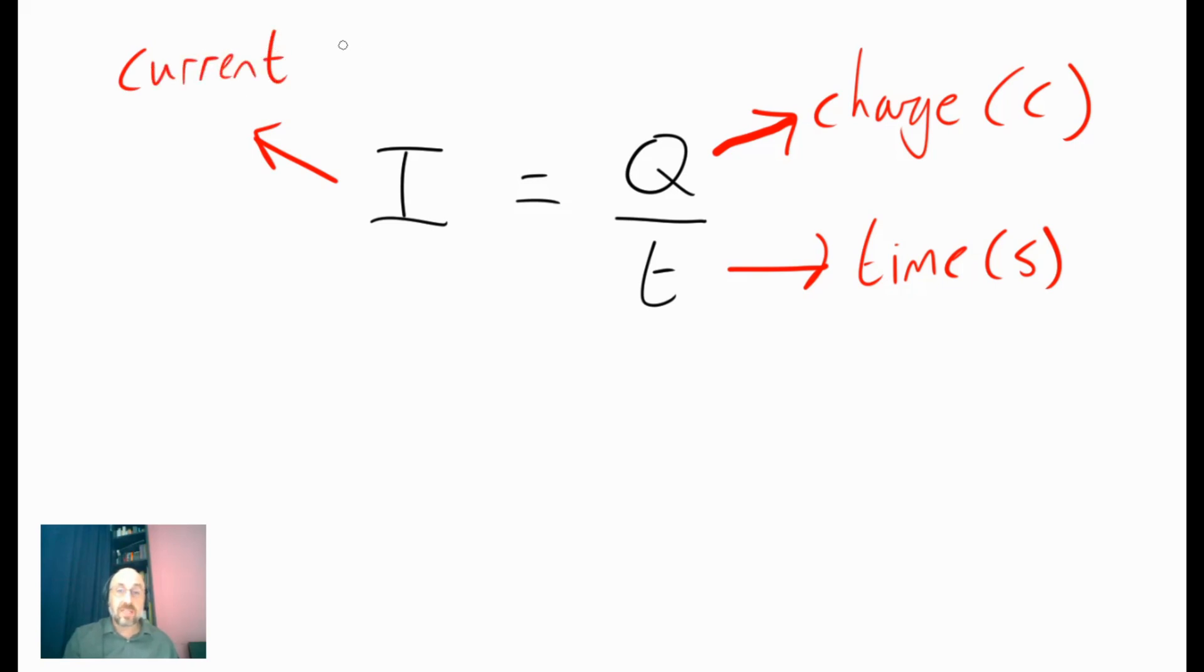So, current is measured in units of coulombs per second. It tells us how many coulombs of charge flow past a particular point per second. However, a lot of people don't use coulombs per second. It's nearly always abbreviated to something else. What we can write is, we can say that one coulomb per second is equal to one amp. So, the units for current, rather than writing coulombs per second, the vast majority of people will write capital A for amps.